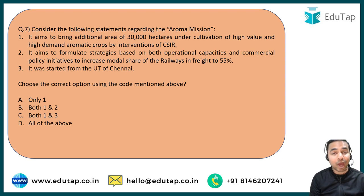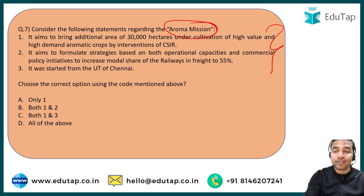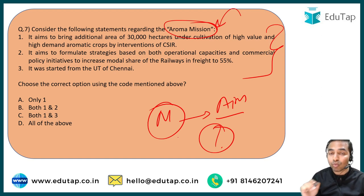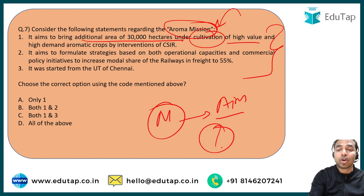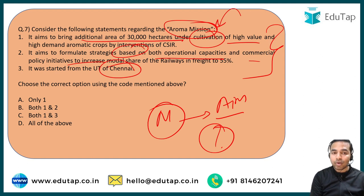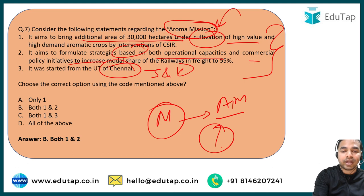The seventh question is on the Aroma Mission. Statement 1: it was launched to bring an additional area of 30,000 hectares under cultivation of high-value and high-demand aromatic crops. Statement 2: it aims to formulate strategies based on operational capacities and commercial policy initiatives. Statement 3: it was started from the Union Territory of Chennai. The correct answer is statements 1 and 2 — it was actually started from Jammu and Kashmir, not Chennai.